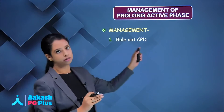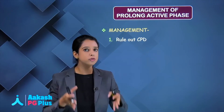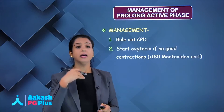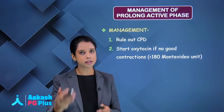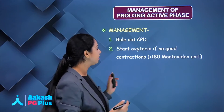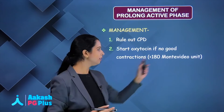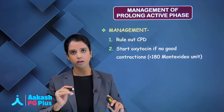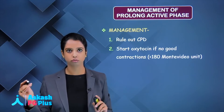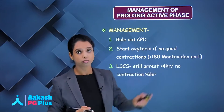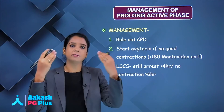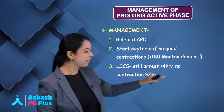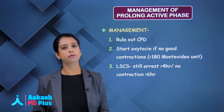First, rule out CPD — see if the pelvis is spacious enough and the fetal size is manageable. Then look at uterine contractions. In units, you can measure 180 Montevideo units — if contractions are less than 180 Montevideo units, contractions are not good and you might have to start oxytocin. If after giving oxytocin there is still no progress for at least 4 hours, or if labour pains have not come for 6 hours with oxytocin, you have to take the patient for caesarean section.